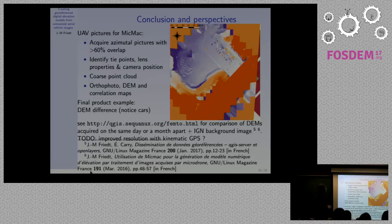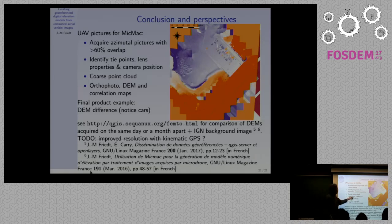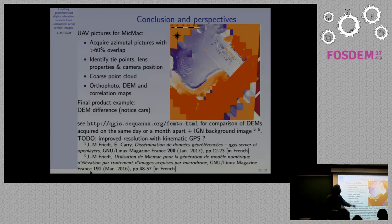As a conclusion, I wanted to show you that using aerial images with at least 60% overlap, you can create digital elevation models by first identifying tie points and automatically generating lens properties — even with a toy camera you can get more or less good quality lens models. You need camera position for a georeferenced model, but if you just want a qualitative model without georeferencing you don't even need GPS. We create a coarse point cloud to verify camera positions, and the result is orthophoto, digital elevation model, and correlation maps to assess result quality. Examples are distributed through the QGIS web server.